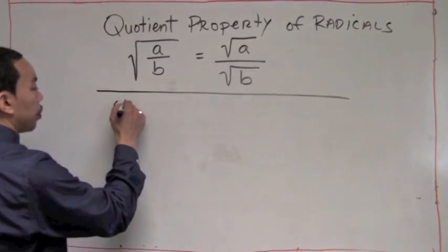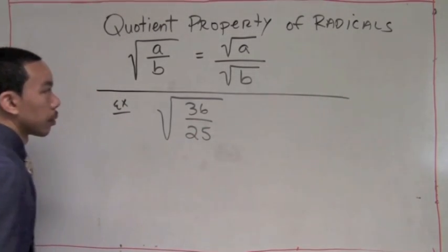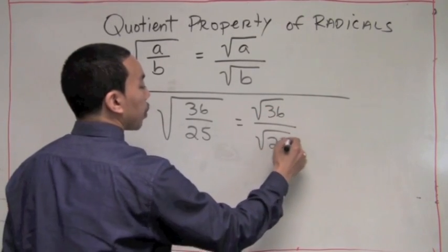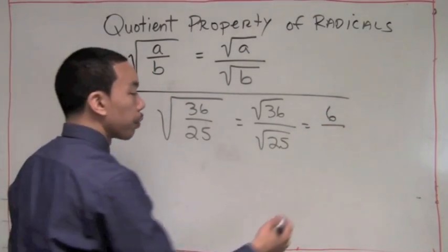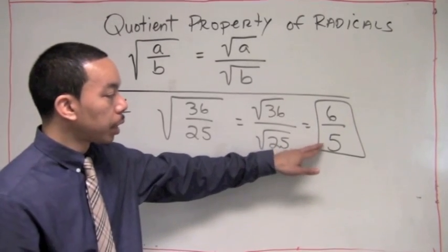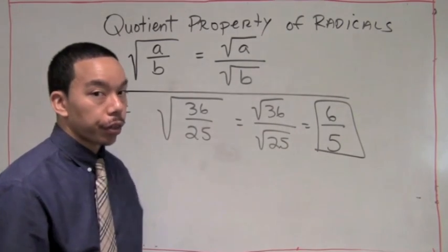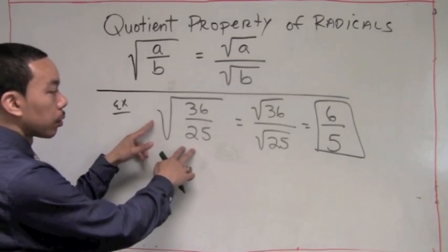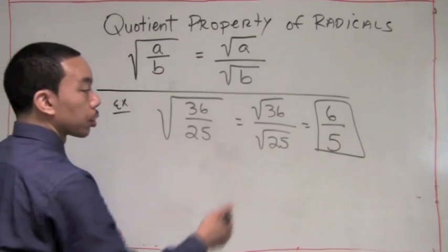Let's try an example: the square root of 36 over 25. According to the quotient property, we rewrite this as the square root of 36 over the square root of 25. The square root of 36 is a perfect square — it's 6. The square root of 25 is also a perfect square — it's 5. So our solution is 6 fifths. Sometimes on the exam they may want you to write it as a mixed number, which would be 1 and 1 fifth. To recap, we had a quotient in a radical, separated the numerator and denominator as separate radicals, and took the square root of each.